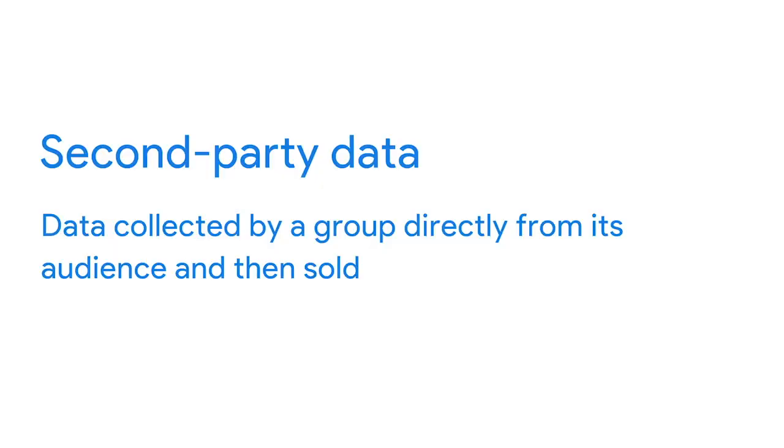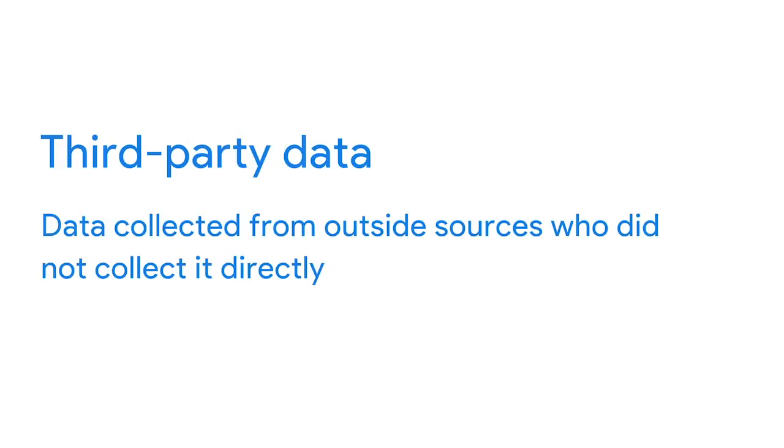You might also have second-party data, which is data collected by a group directly from its audience and then sold. So in our example, if you aren't able to collect your own data, you might buy it from an organization that's led traffic pattern studies in your city. This data didn't start with you, but it's still reliable because it came from a source that has experience with traffic analysis. The same can't always be said about third-party data — data collected from outside sources who did not collect it directly. This data might have come from a number of different sources before you investigated it, so it might not be as reliable. But that doesn't mean it can't be useful — you'll just want to make sure you check it for accuracy, bias, and credibility.